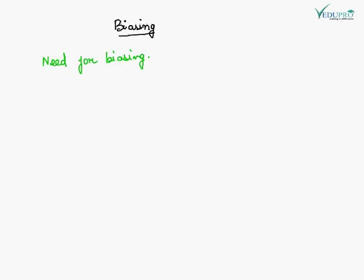Let's discuss what biasing is. There are three modes of operation of a BJT: saturation, cutoff, and active. Biasing is required to select any one of these modes of operation. Now let's discuss the need for biasing.